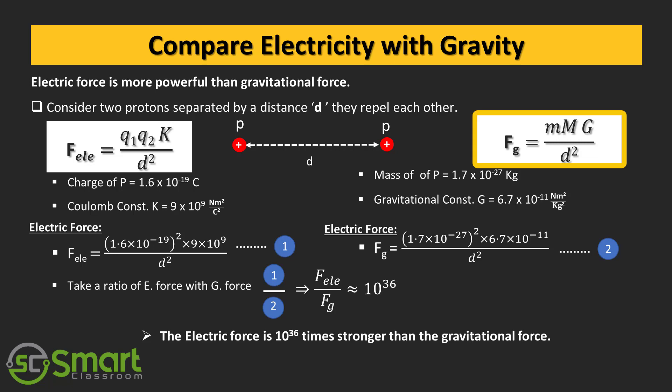In the case of gravitational field, the force of gravity fg equals small m capital M G divided by d square. The mass of the proton equals 1.7 into 10 to the power minus 27 kilogram, and the gravitational constant G equals 6.7 into 10 to the power minus 11 newton meter square per kilogram square. Just substitute this value on equation number 1 and 2 and take the ratio of electric force with gravity. Then you will get force due to electric field divided by force due to gravitational field is approximately equal to 10 to the power 36.